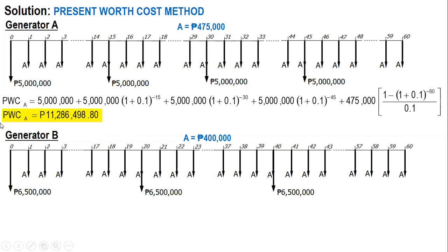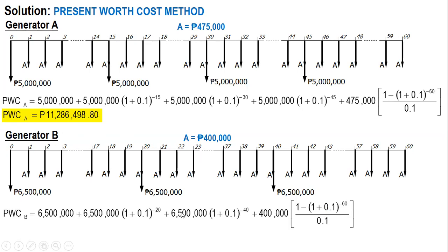We do the same for generator B. So 6.5 million plus the present worth of this, plus the present worth of this, and lastly the present worth of the annuity. Negative 20, negative 40. Okay. And the present worth cost of generator B is 11,596,663.50.